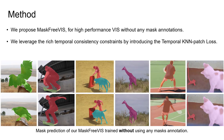Here we show video instance segmentation results of our Mask-Free VIS, trained without using any video or image mask annotation. By achieving a remarkable 42.5% mask AP on the YouTube VIS Val dataset with the ResNet-50 backbone, our approach demonstrates that high-performing VIS can be learned even without any mask annotations. Our approach further scales to larger backbones, achieving 55.3% mask AP on the Swin-L backbone with no video mask annotations.